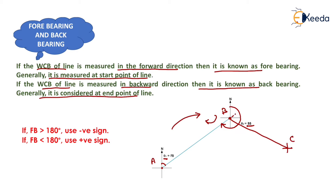Now if this line is extended, then this angle will be theta1, which is the forebearing. So we can write: backbearing equals forebearing plus or minus 180 degrees. The plus sign is used when forebearing is less than 180 degrees, and the minus sign is used when forebearing is greater than 180 degrees. That is the relation between backbearing and forebearing.